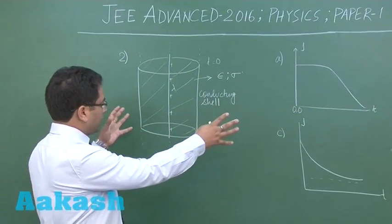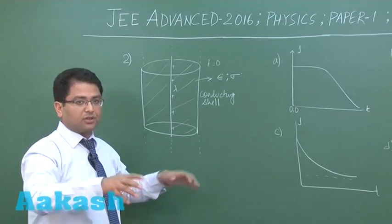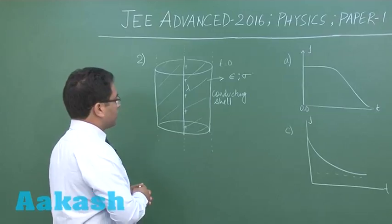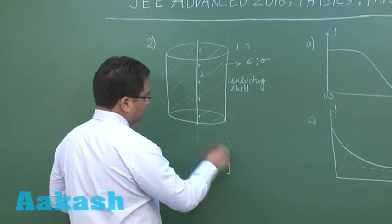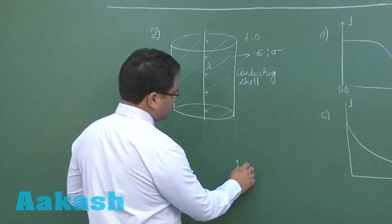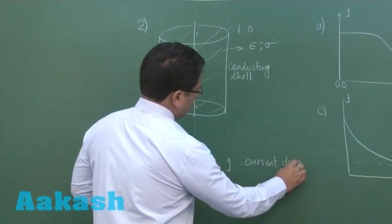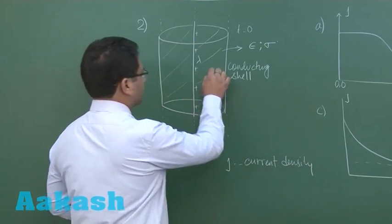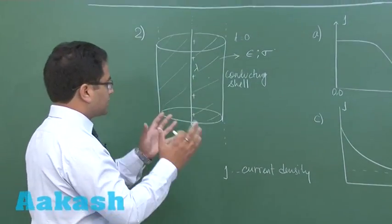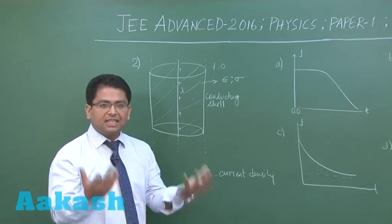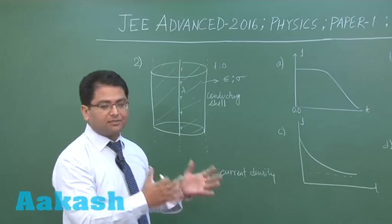The question demands the variation of J, which is the current density at a given point. That means you concentrate on one location - the location is fixed - and you have to see the variation of J at a given point with respect to time.